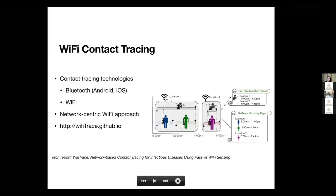Contact tracing has been a largely manual process for decades using interviews and surveys. With the emergence of COVID, there has been a lot of interest in using technologies to address this problem — to scale it or do what may not be possible manually. By and large, most of these techniques have used smartphones. The most common method is actually to use the Bluetooth capability of your phone to help with contact tracing, and if you have an updated version of Android or iOS, this is now built into your phone.